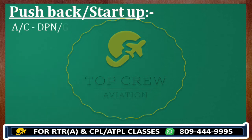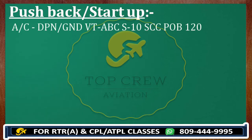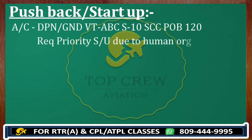Let's make one priority call. That would be: Delhi Ground, Victor Tango Alpha Bravo Charlie, stand one zero, security check carried out, persons on board one two zero. Request priority startup due to human organ on board, info Bravo. So we will tell them why we need priority startup.